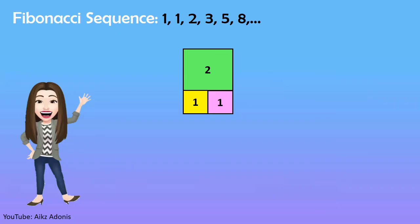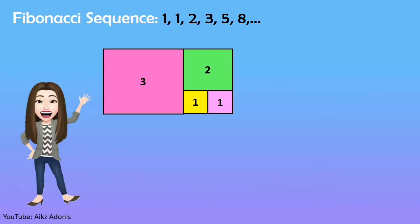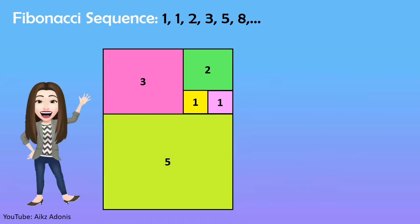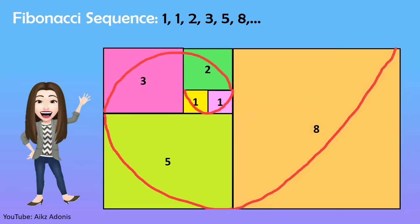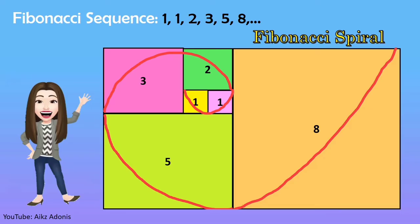Next to that is a 3 by 3 square. Beneath that, a 5 by 5 square. Now, if we continue to do this and connect opposing diagonals continuously, it will reveal the Fibonacci spiral.